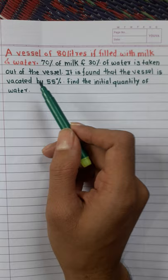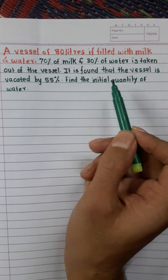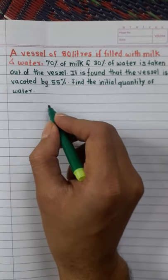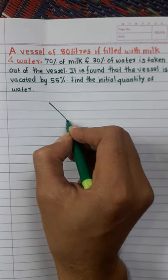the vessel is vacated by 55%. Find the initial quantity of water. First of all, we will use mixture and alligation.